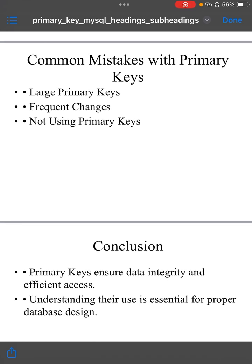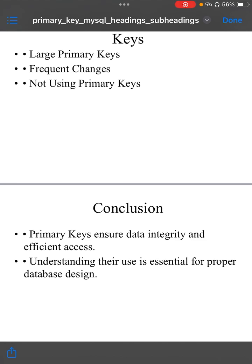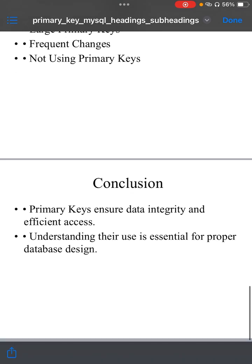Few common mistakes with primary key. Choosing a large column as primary key: avoid using large columns like varchar(255) as a primary key, as it increases the size of index and reduces performance. Changing primary key frequently: you should not change primary key very frequently, it degrades performance. Not having a primary key: every table should have a primary key to ensure data integrity and efficient access.